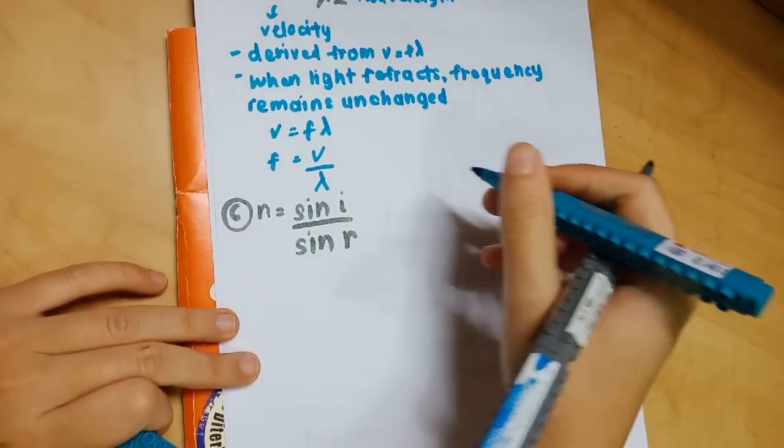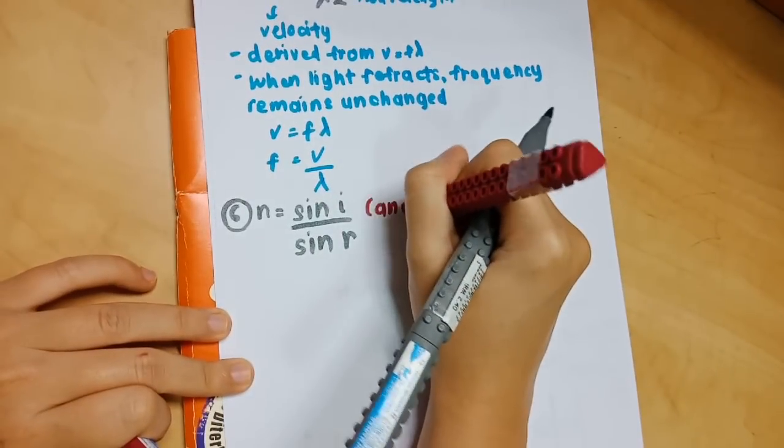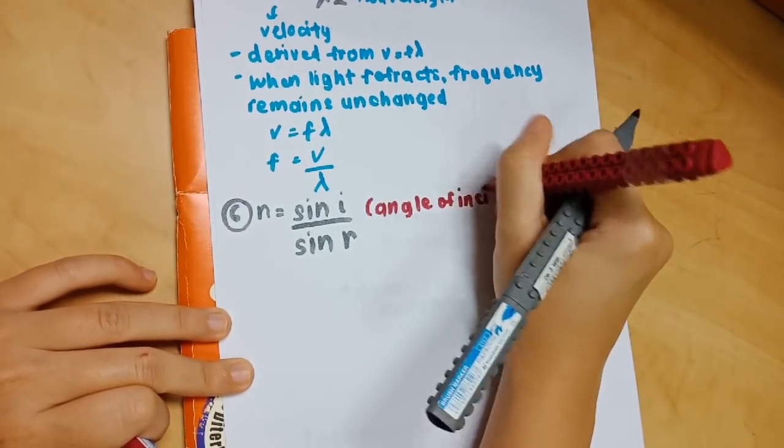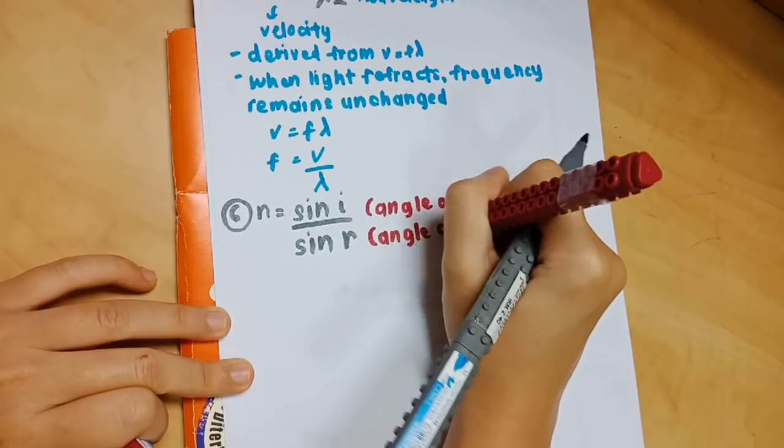Number 6: n equals sin i over sin r. This is something from Form 4 also. I is the angle of incidence and r is the angle of refraction.